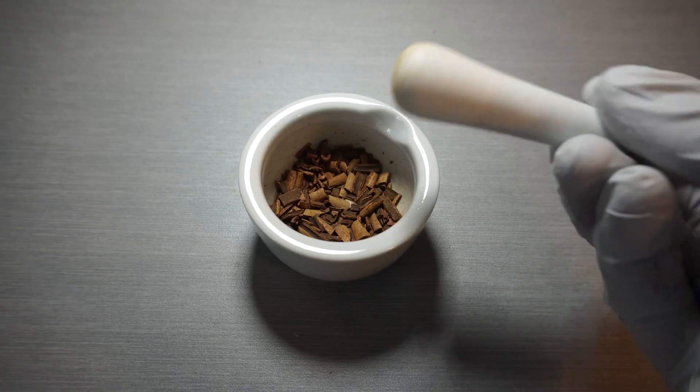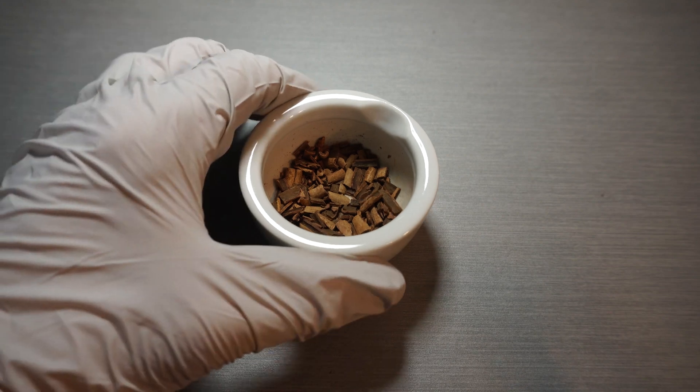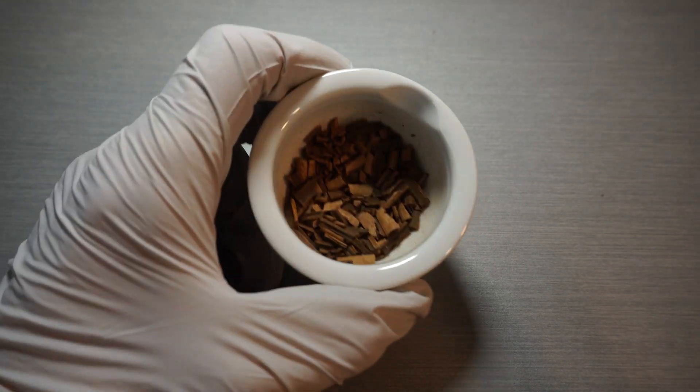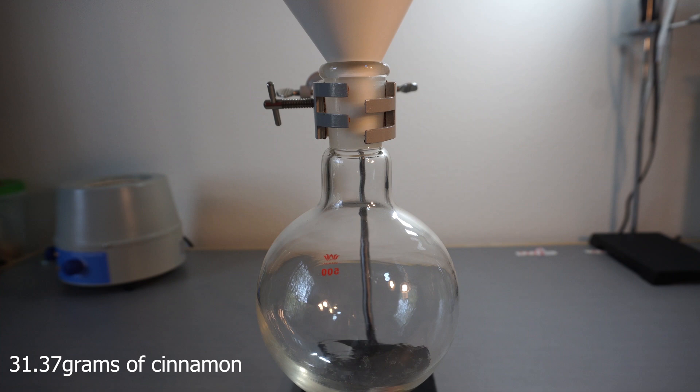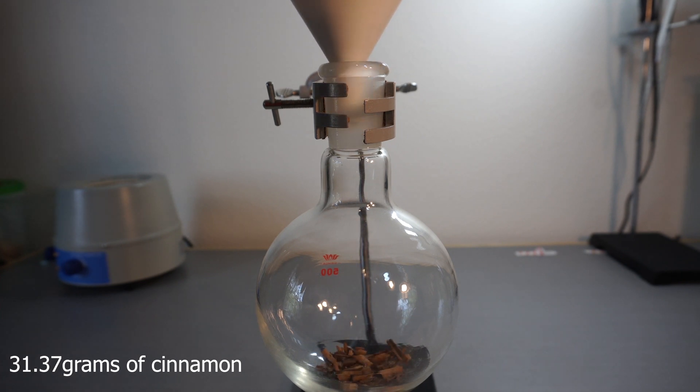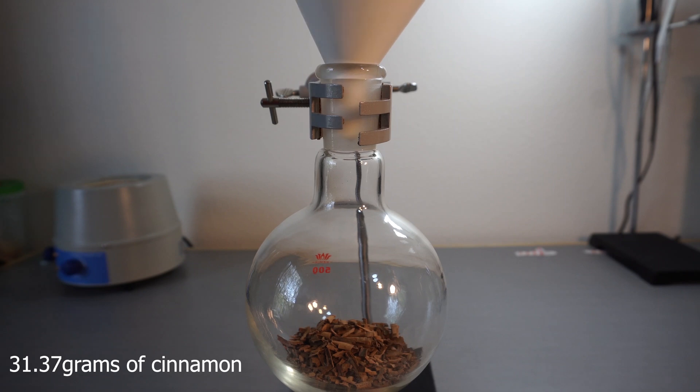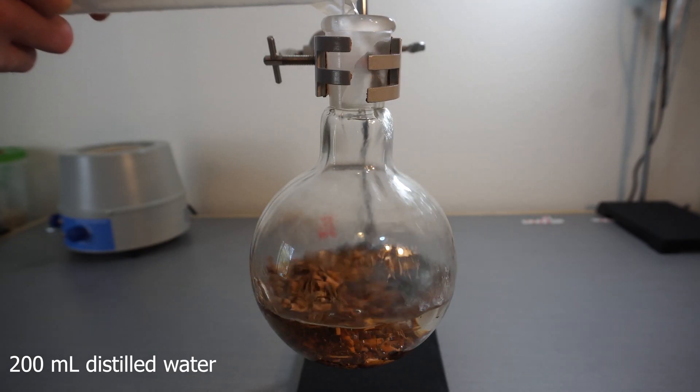We grind down the cinnamon, and we want to avoid grinding it into dust because this will make the distillation foam and cause a possible overflow. I ended up grinding down about 32 grams of cinnamon and added it to the boiling flask, followed by 200 milliliters of distilled water.